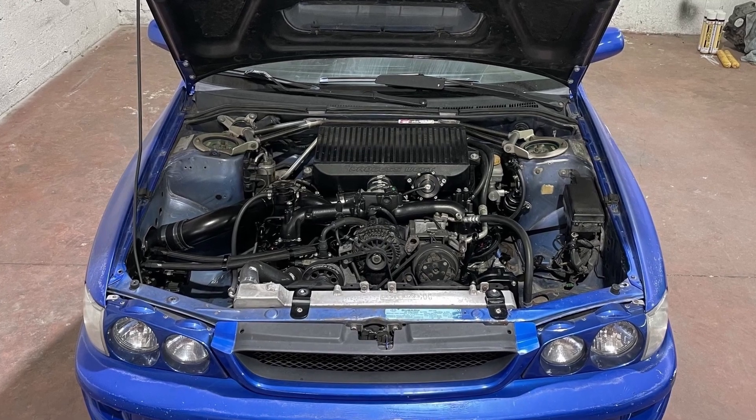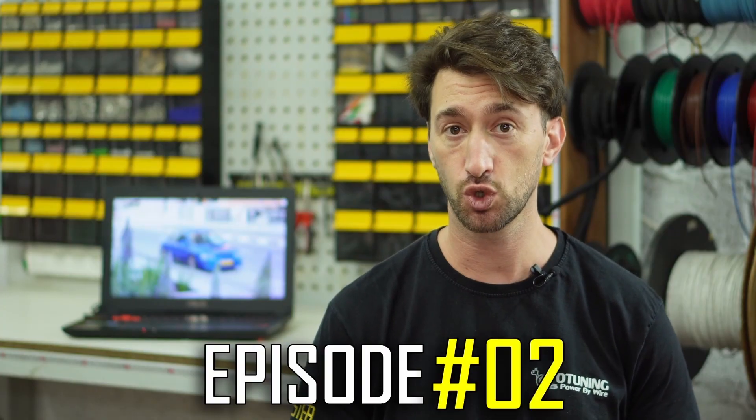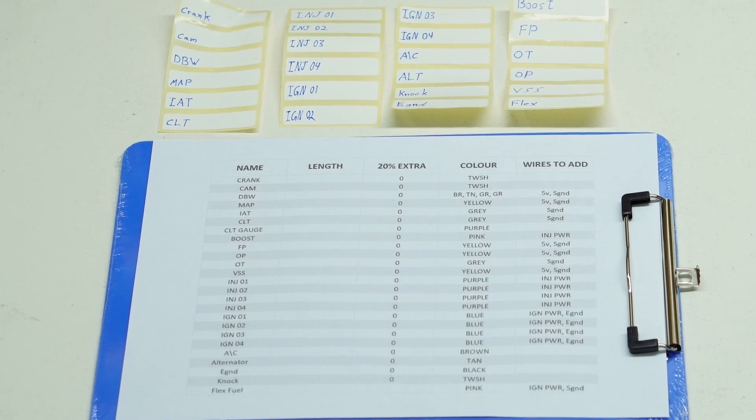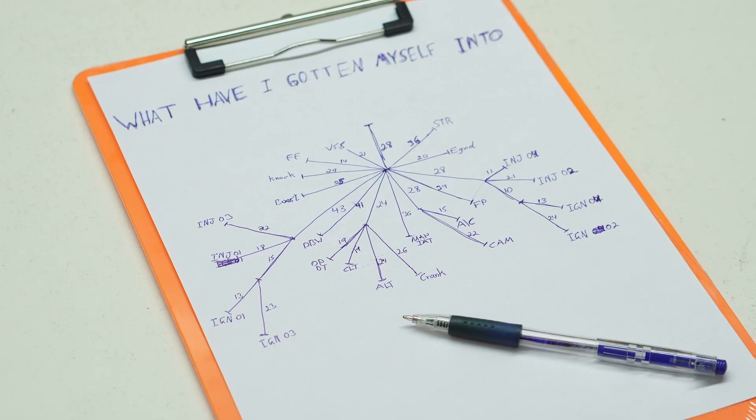What's up guys, welcome back to the GC Journey. This is now episode two in the GC8 engine bay harness series. Last episode we listed all the components in the engine bay that we are going to be wiring. We did the harness layout and branching and copied it onto paper.